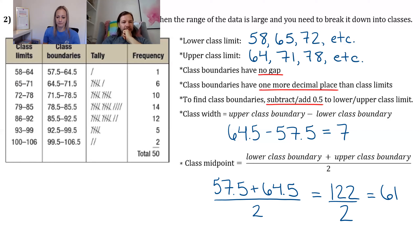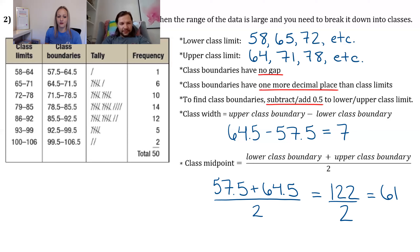A student asks: can you use class limits instead of boundaries to find the midpoint? Yes — either method works; 61 is right between 58 and 64. Another student asks: for class width, can you do 64 minus 58 plus one? Yes, but using boundaries is simpler and avoids a common mistake. Doing 64 minus 58 gives six, but counting 58 through 64 there are actually seven numbers. Using boundaries (64.5 minus 57.5) gives 7 directly.